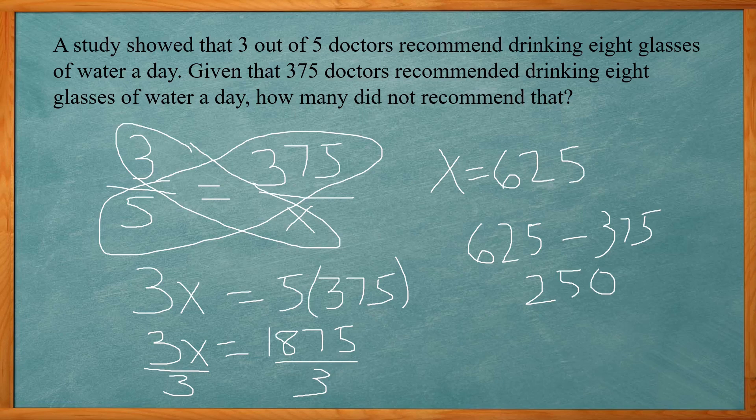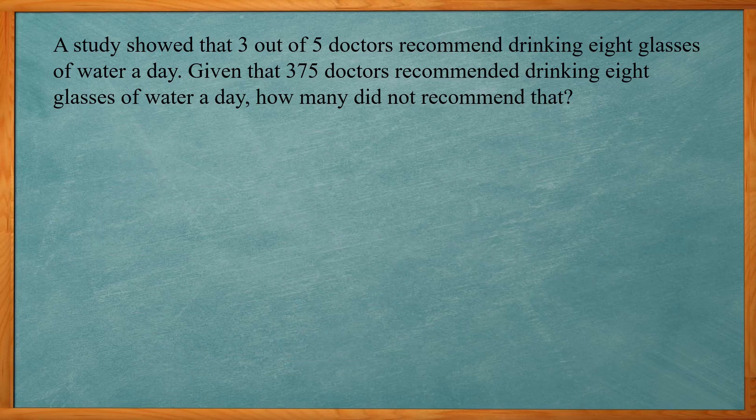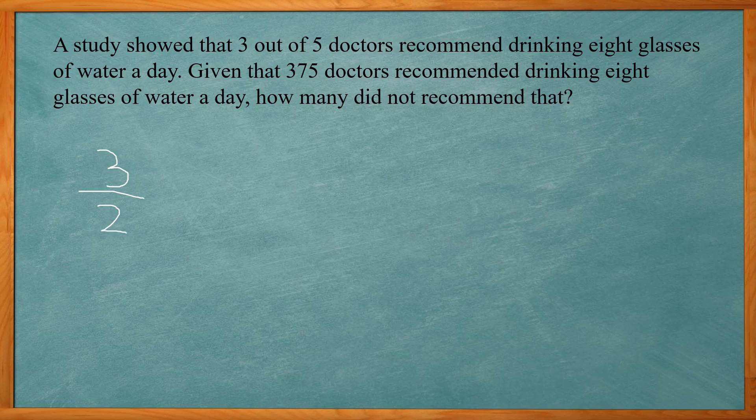So there's another way to solve this problem. So let me show you that. Another way of setting this up is putting 3 over 2, so basically 3 recommended it and 2 did not. 3 correlates to 375 and the x would be how many did not recommend it.